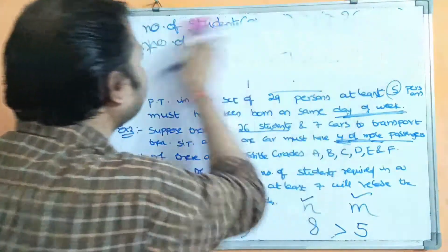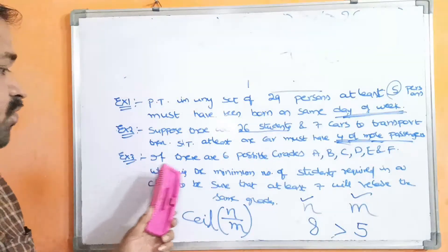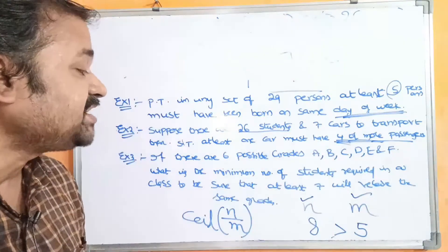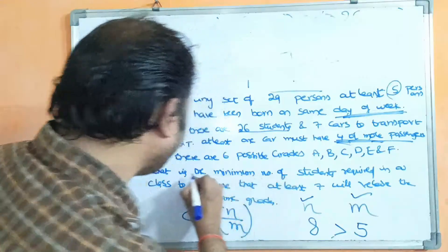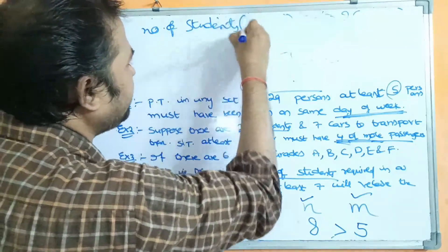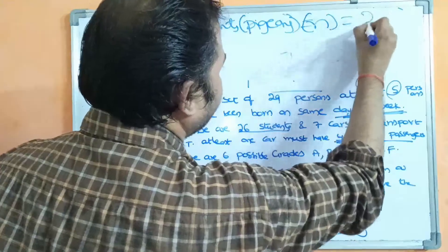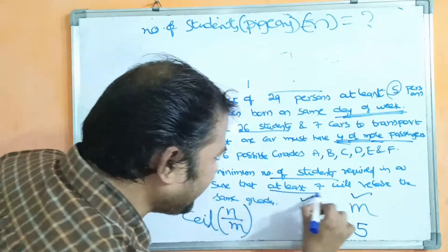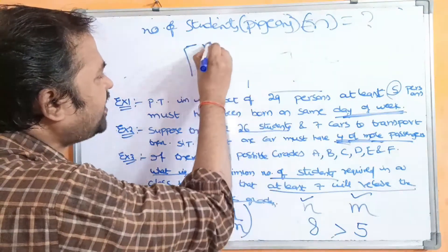Now let us see the third example. If there are 6 possible grades — A, B, C, D, E, F — what is the minimum number of students required in a class to be sure that at least 7 will receive the same grade? Here we have to calculate the number of students, which is n. The result given is 7, meaning ceiling of n by m equals 7.